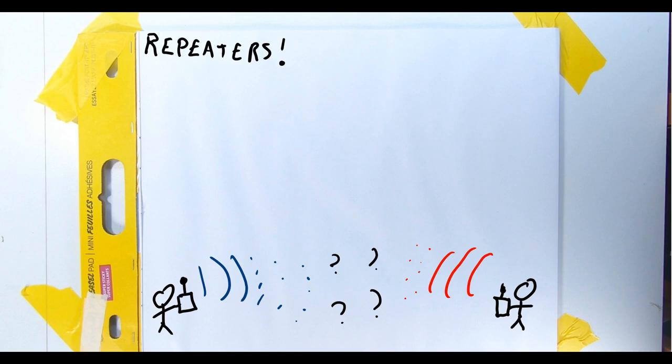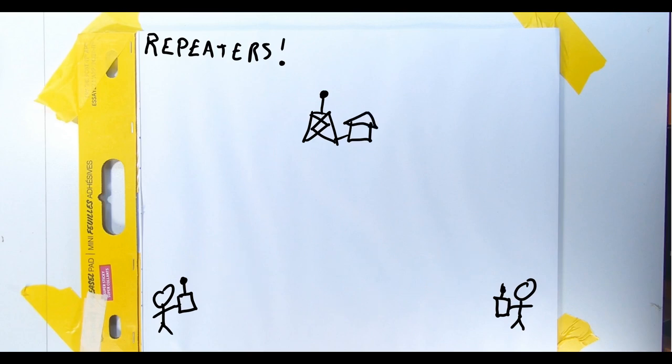Imagine a third station, set up elsewhere in a duplex mode. This station listens on one frequency, and then transmit what it hears simultaneously on a second frequency, usually with amplified power. The two HTs can't hear each other, but they both can hear that third station, and it can hear them.